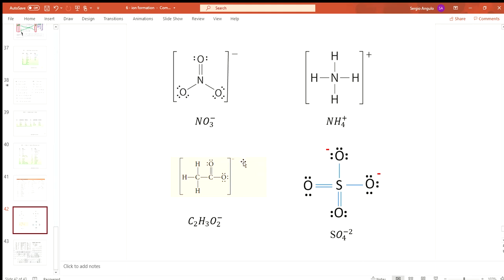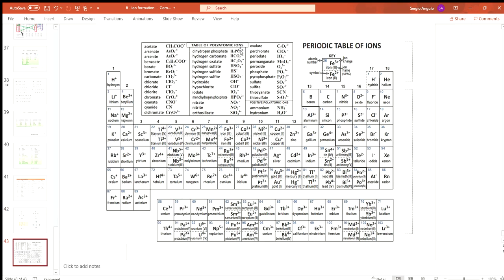It's very common to put the structure into brackets and then put the charge in the upper right corner. This one did it a little differently—it actually assigned the charge to specific oxygens. But we could have written it the other way. Both ways work. We could have put brackets here and not put the negatives here but put a negative two in the upper right.